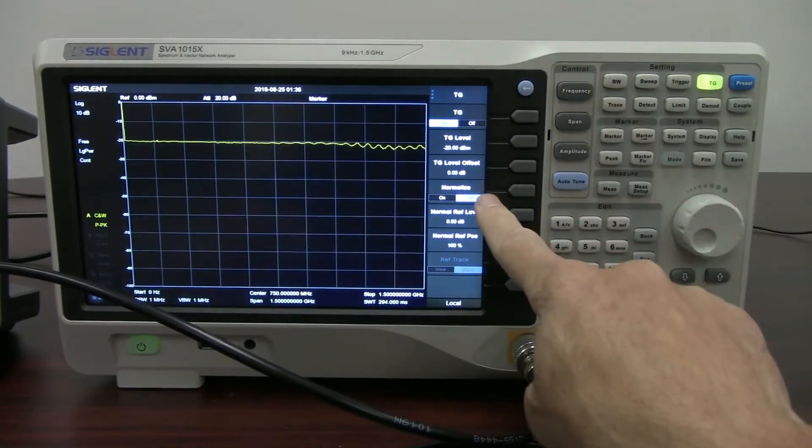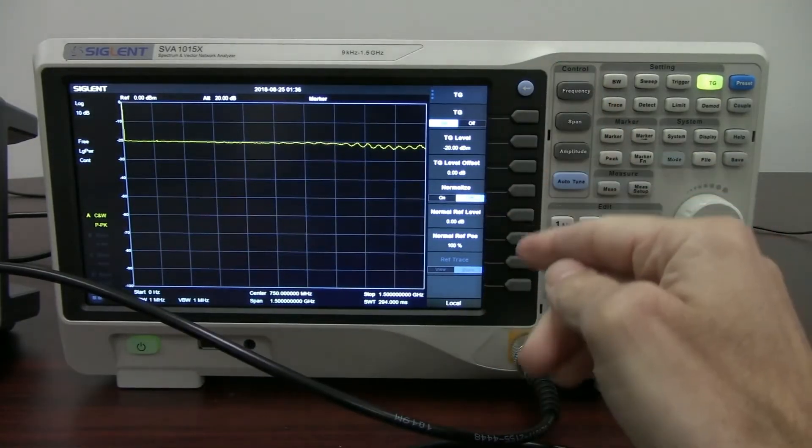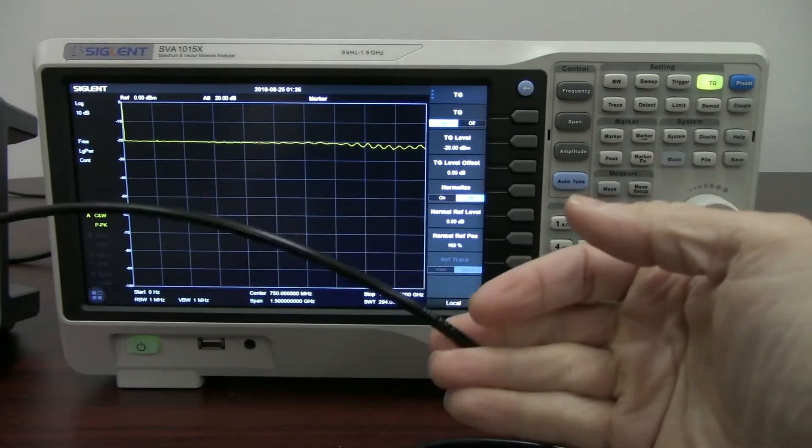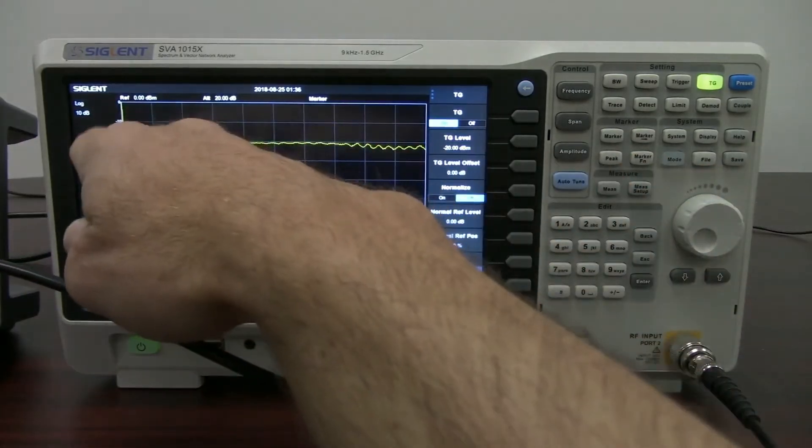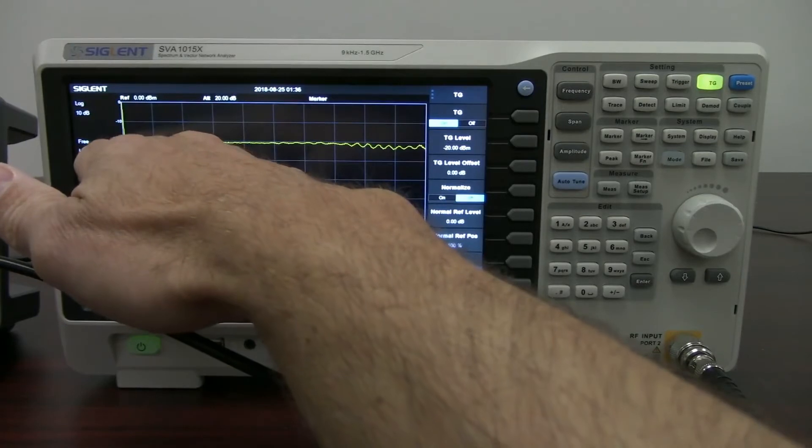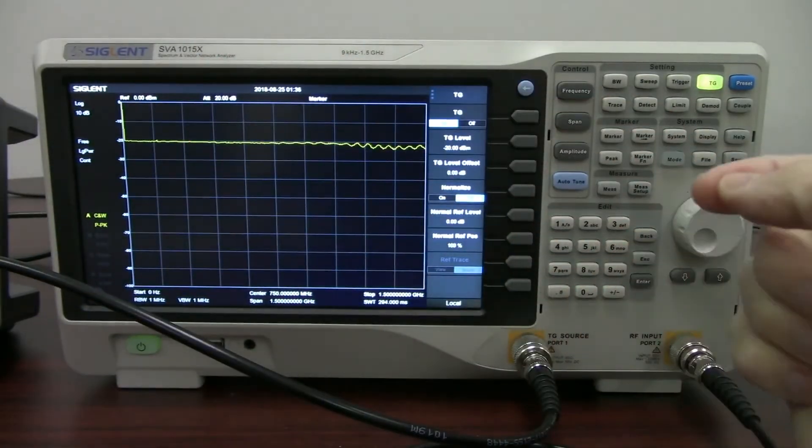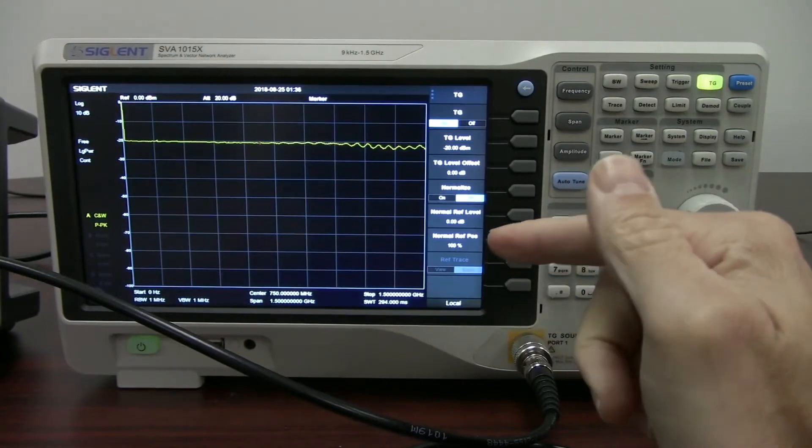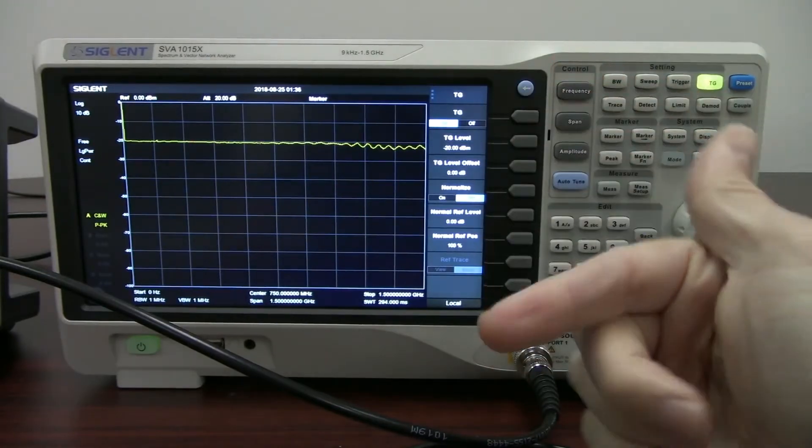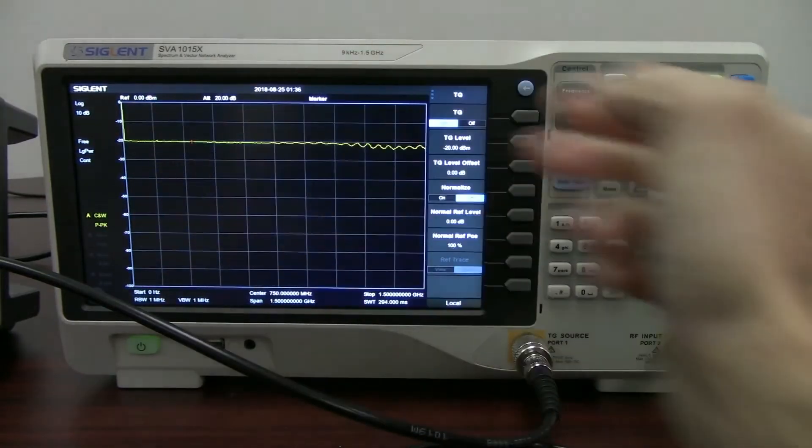We can very easily do that by normalizing. Here you'll see the normalize button. This is mathematically going to subtract this signal and normalize it. So it's going to take this value at each frequency across here, each frequency bin. Each value that we have on there is going to be subtracted from itself, and we're going to get zero.